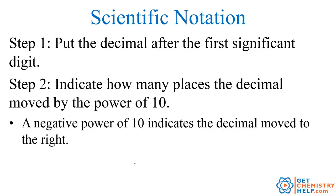Now, for smaller numbers, the decimal moves the other way, and then we get a negative power of 10. A negative power of 10 indicates the decimal must have moved to the right. For example, let's say I have 0.000000140. The first step is I want to figure out which digits are significant.